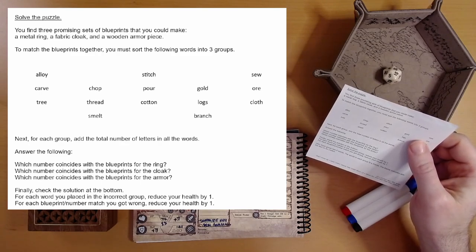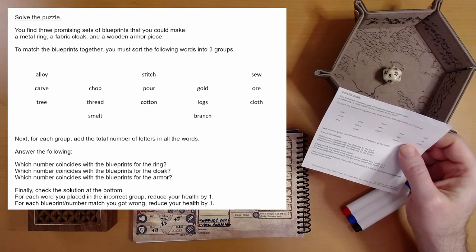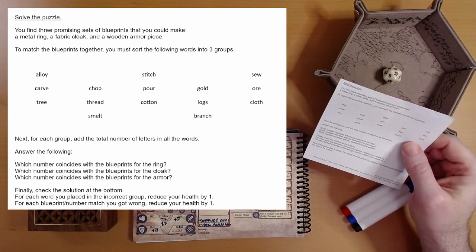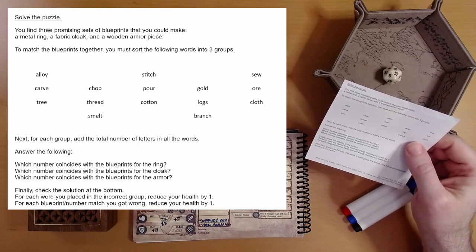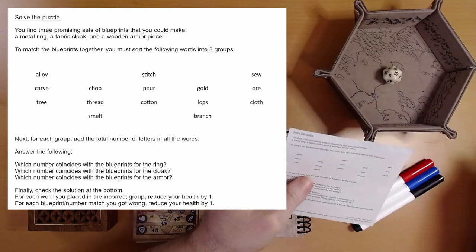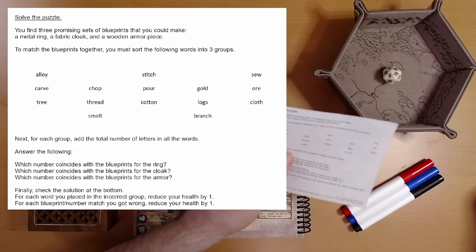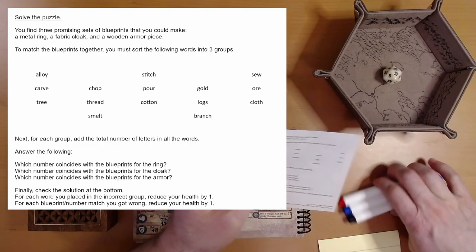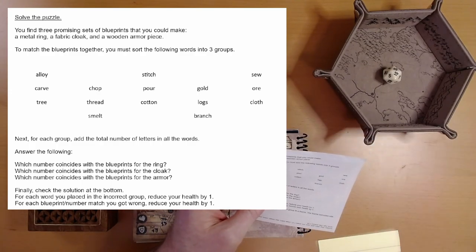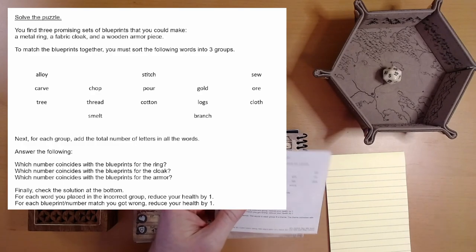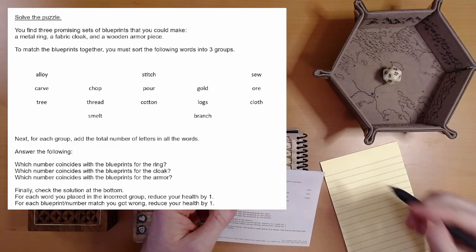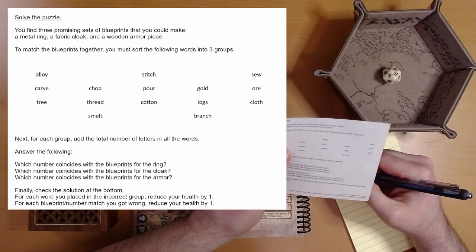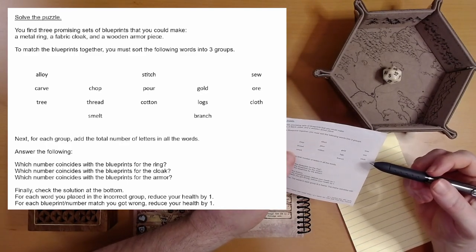Okay. The camera will focus. I don't know if the camera is going to focus. I'll put it up on screen. The words are alloy, carve, tree, chop, thread, smelt, stitch, pour, cotton, gold, logs, branch, sew, and cloth. Next for each group, add the total number of letters in all the words. Let's do this. How are we going to do this?